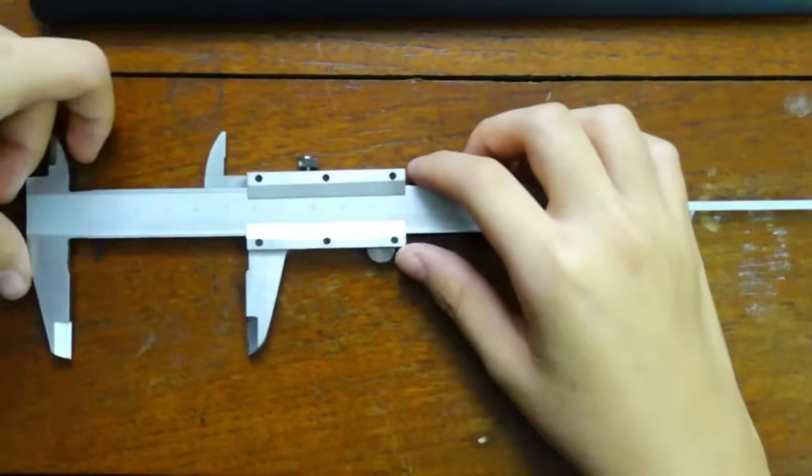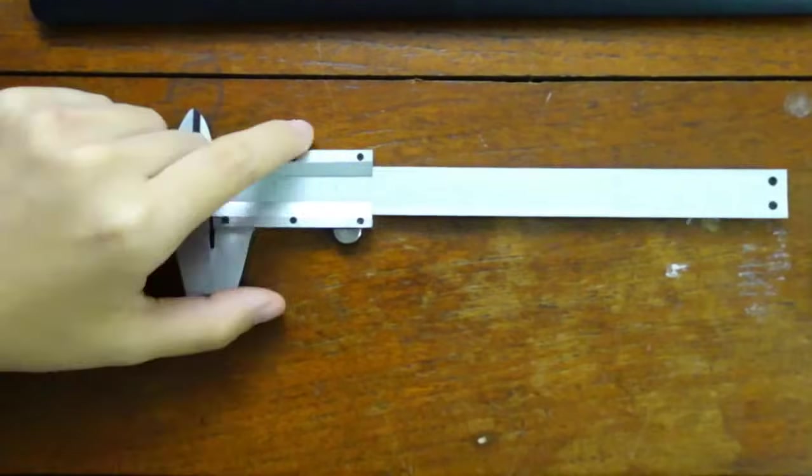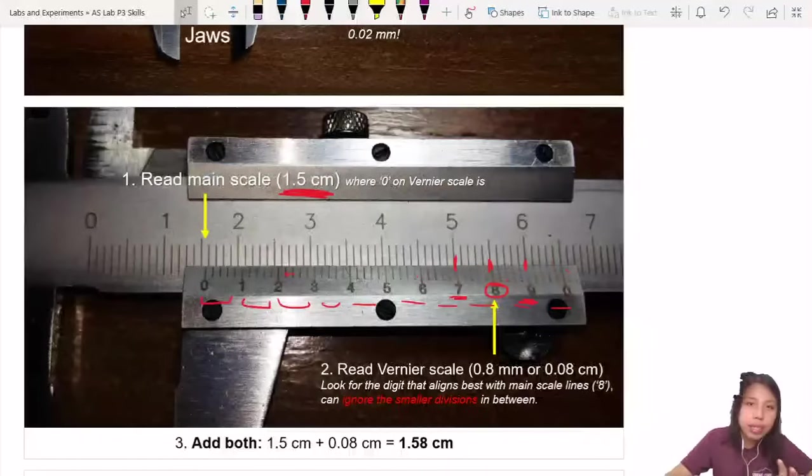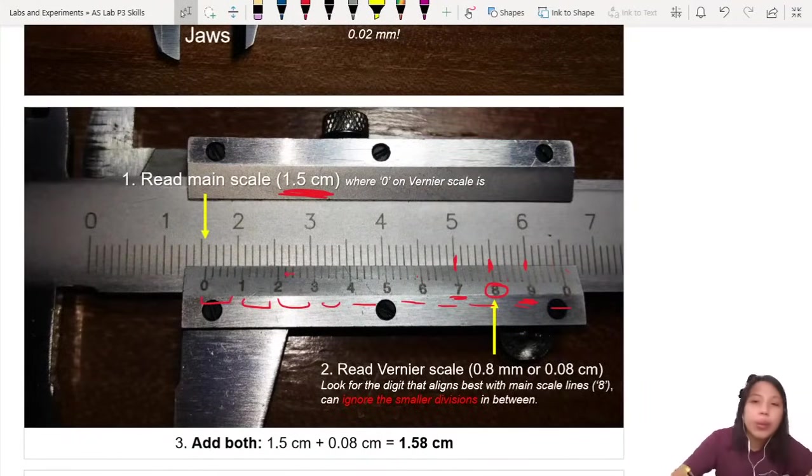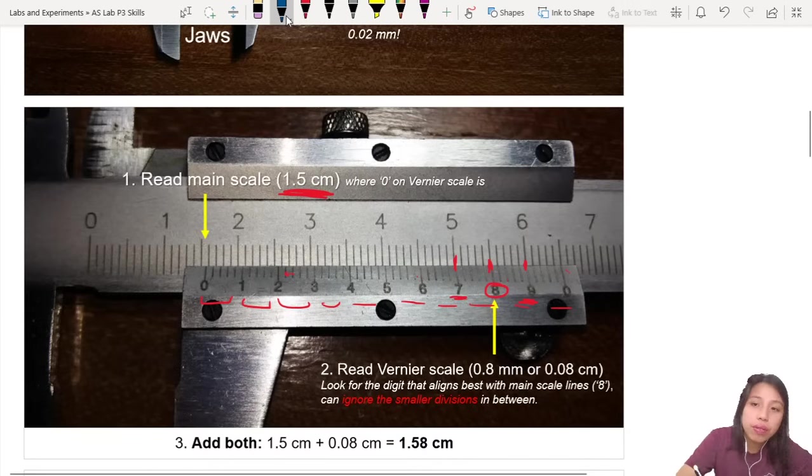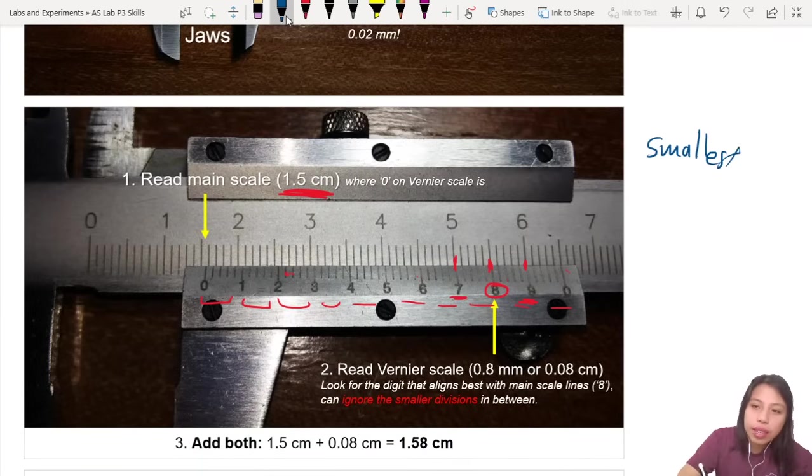Unless your uncertainty is zero, then don't do that. Okay, so what is the uncertainty of your vernier calipers? Well, the minimum uncertainty of the instrument is related to the smallest division. So the smallest division in this case, although the tiny line, can I see this tiny line?